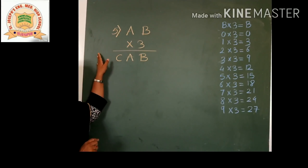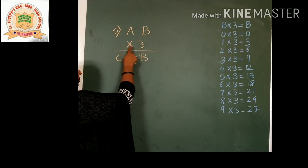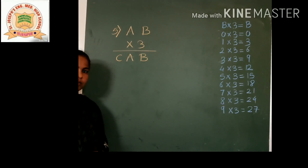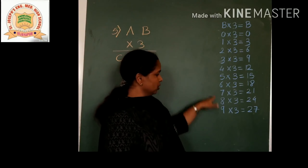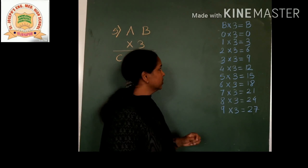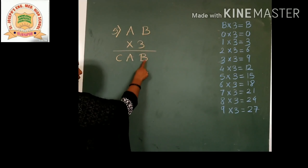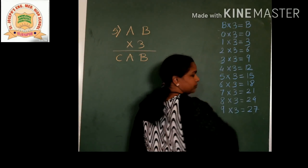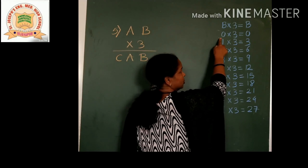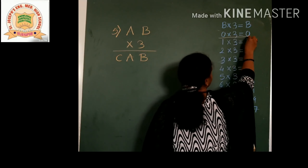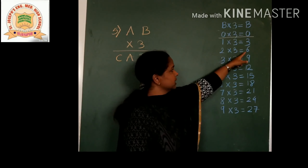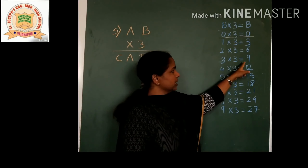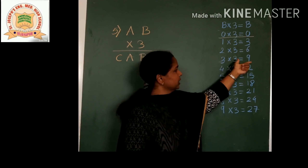This is a typical problem — Letters for Digits. Here you can see AD multiplied by 3 gives BAC. First, one letter stands for one digit, so the value of B must be between 0 and 9. Notice B times 3 gives a unit digit of B. So: 0 times 3 is 0 — possibility. 1 times 3 is 3 — no. 2 times 3 is 6 — no. 3 times 3 is 9 — no. 4 times 3 is 12 — unit 2, no. 5 times 3 is 15 — unit 5, yes. So possibilities for B are 0 or 5.